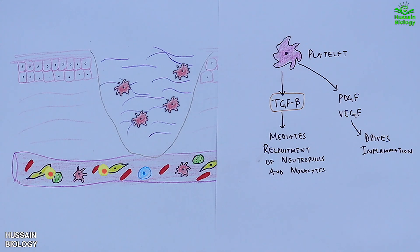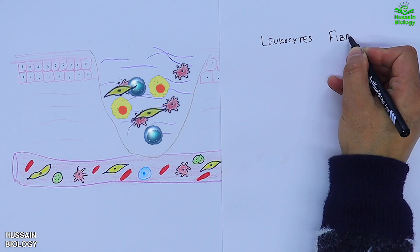We also get the influx of macrophages from here shown in the diagram. Now moving forward towards the inflammation step where we get the recruitment of leukocytes and fibroblasts.